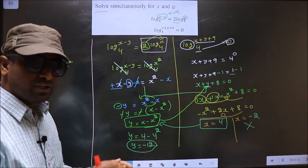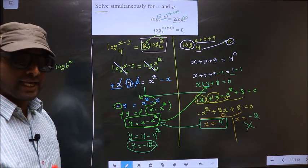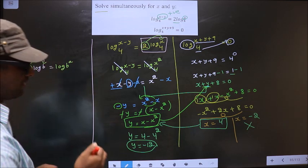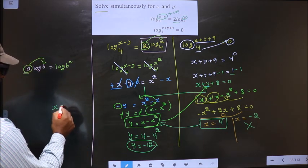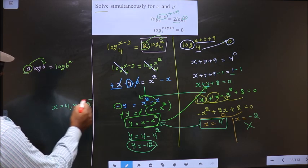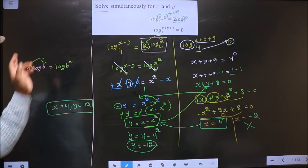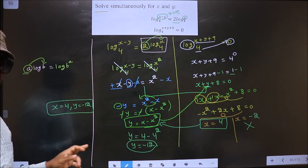Y can be negative because we don't have log y directly in the equations. So we get x = 4 and y = -12. This is our answer.